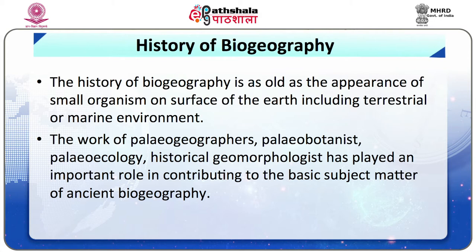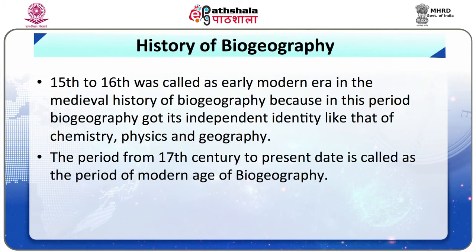During ancient times, the distribution of flora and fauna was not like it is today. This part of historical biogeography dealt with the great mammoth, dinosaurs and giant trees which lived on the surface of the earth nearly 200 million years ago. The medieval period starts approximately from 4000 years before Christ to the 16th century. The 15th to 16th century was called the early modern era in the medieval history of biogeography, because in this period biogeography got its independent identity like chemistry, physics and geography. The period from the 17th century to present date is called the modern age.